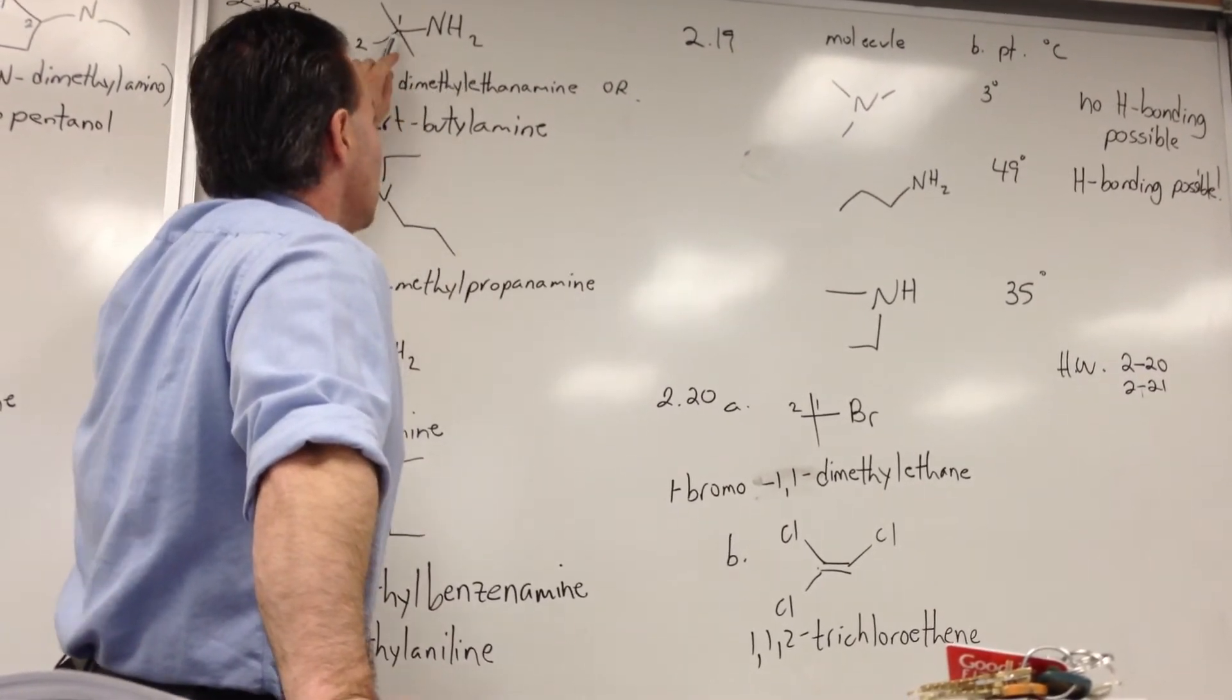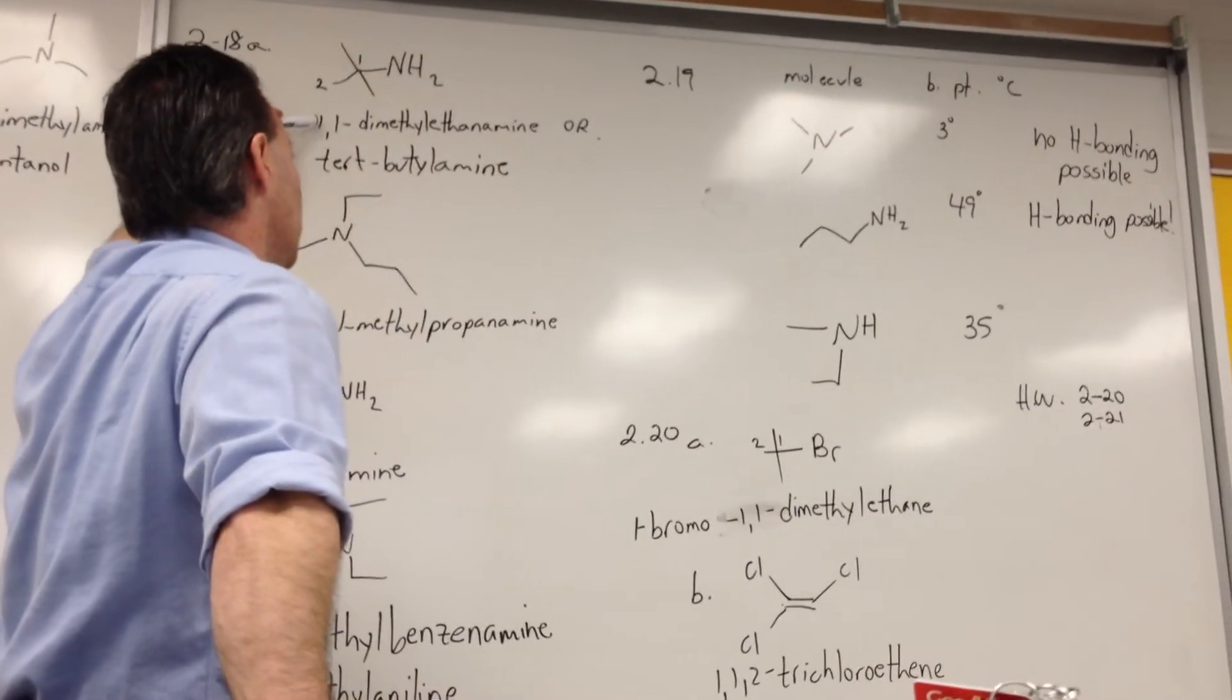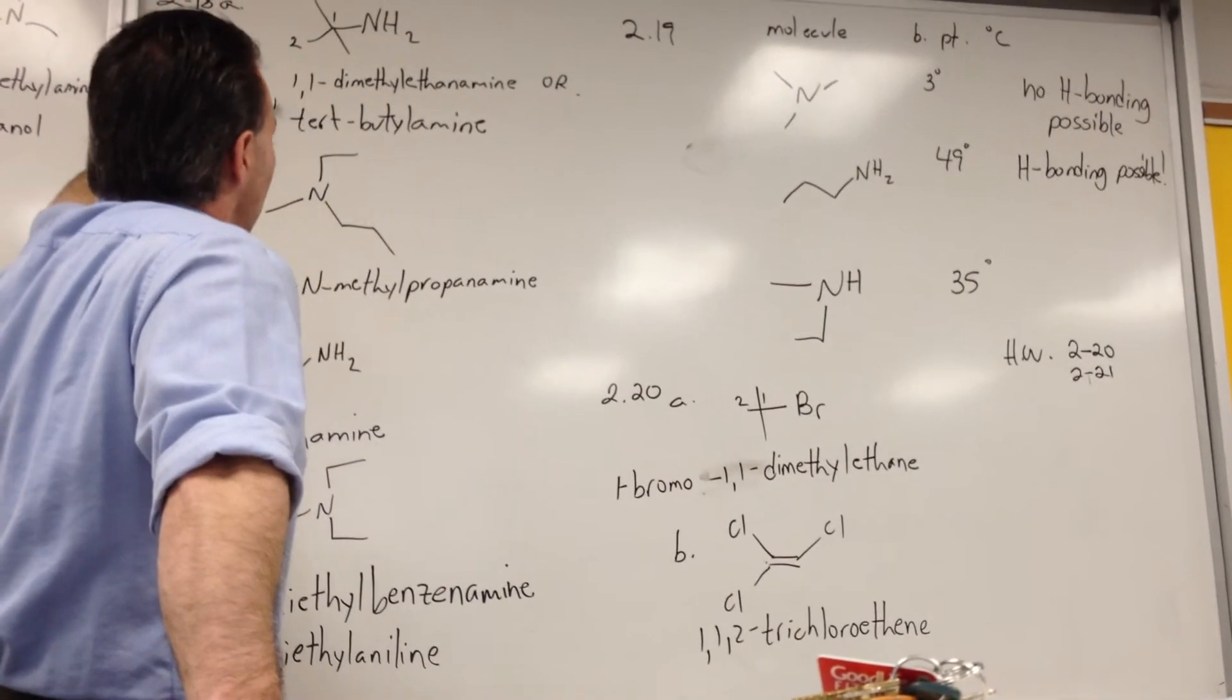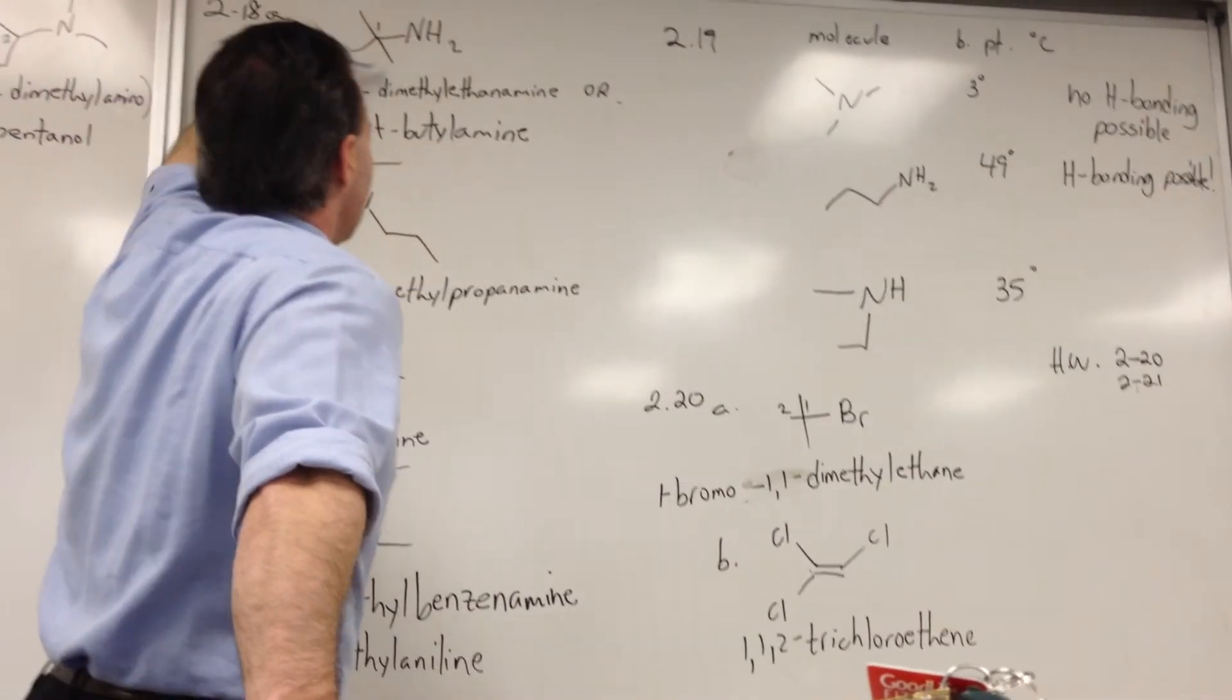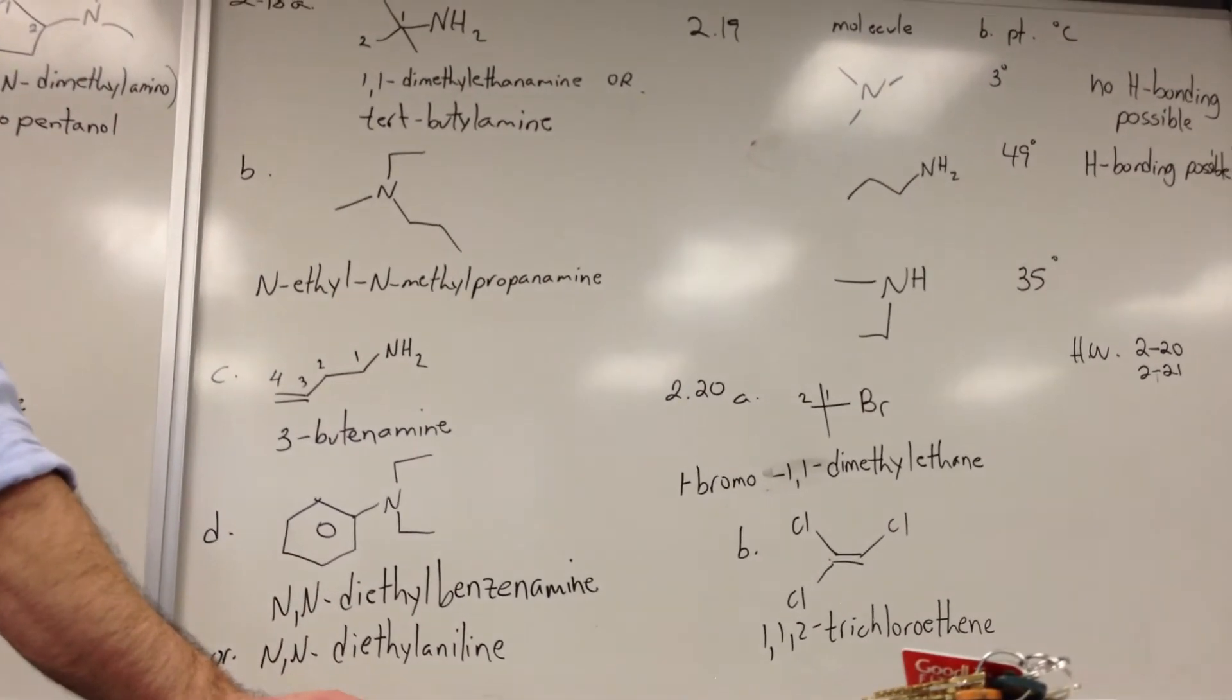and then there are methyl groups at the first position. So we call it 1,1-dimethyl. We don't say N, because it's not attached to the nitrogen. It's attached to the carbon, which is attached to the nitrogen. So we simply say 1,1-dimethyl ethanamine. You could also say tert-butylamine, because this is actually a tert-butyl group, which we can recognize if we've memorized them.